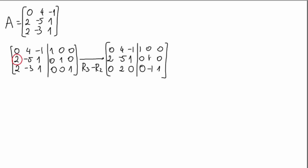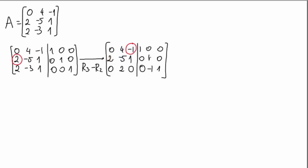To avoid destroying your previous work, before choosing the next pivot you should cover the row in which you already have a pivot. Here we cover the second row, since that's where our first pivot was. From the remaining visible entries — 4, negative 1, 2, or 0 — we choose negative 1, since 0 cannot be a pivot. The hint is to use 1s or negative 1s because they are easy to operate on.